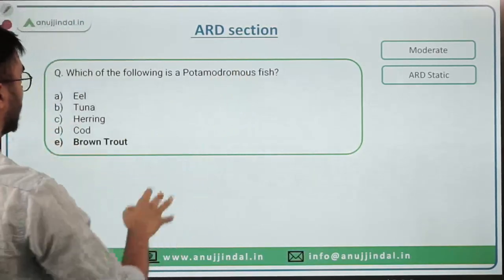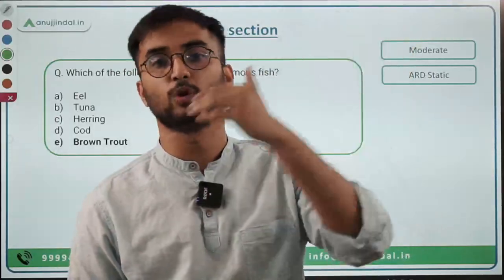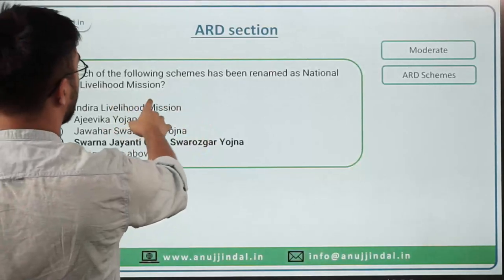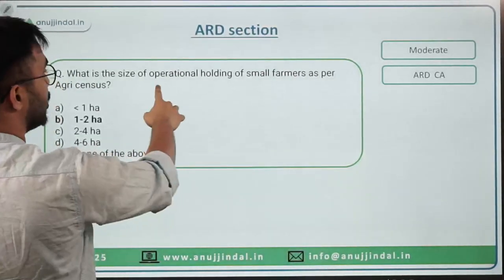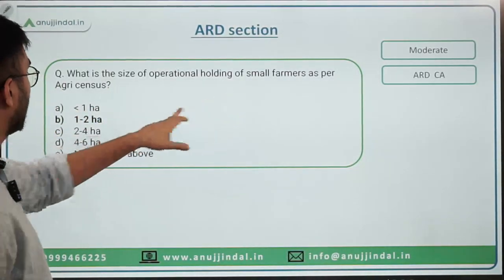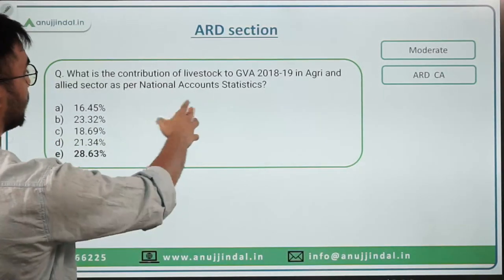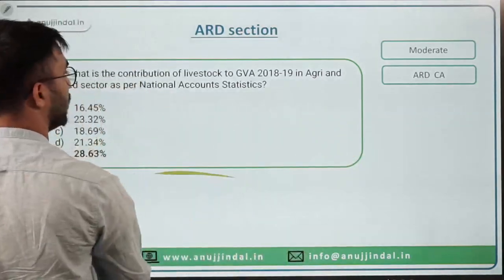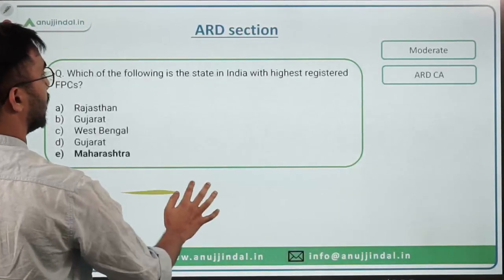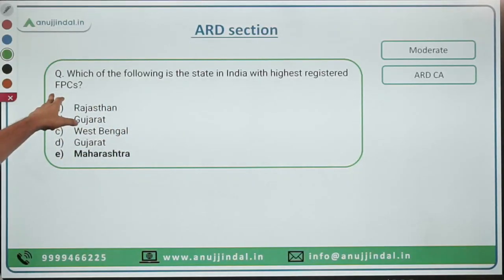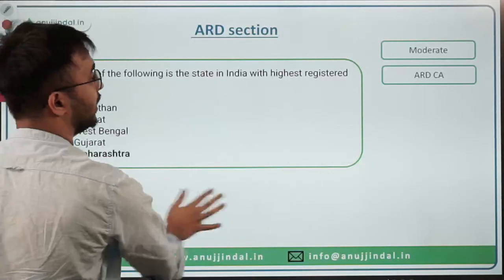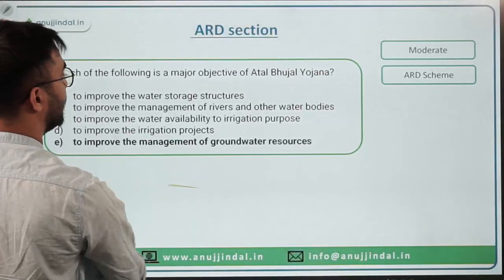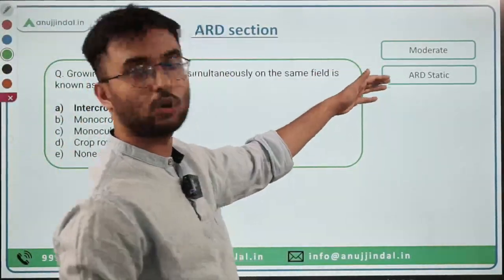'Potamodromous fish' — these are freshwater fish that migrate from downstream to upstream and back; asked directly from fisheries static. 'Size of operational holding for small farmers' — 1 to 2 hectares. 'Contribution of livestock to agriculture' — 28.63%, covered in reports and current affairs. 'State with highest registered FPCs' — Maharashtra, covered in current affairs. 'Curing process' in fisheries was also asked. All questions are either static, current affairs, or general awareness.